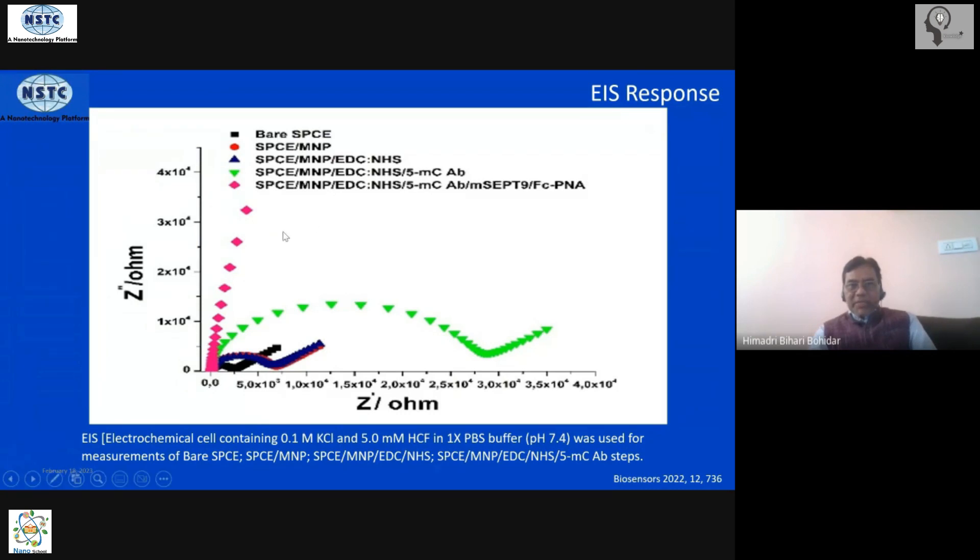Now you start functionalizing with different compounds here and also with the antibody then it becomes like this. Charge transfer resistance has become very very large. When you are adding biological material to the electrode surface, the electrode surface becomes less conducting because these biomaterials are not conducting.